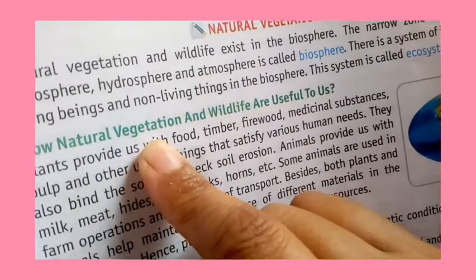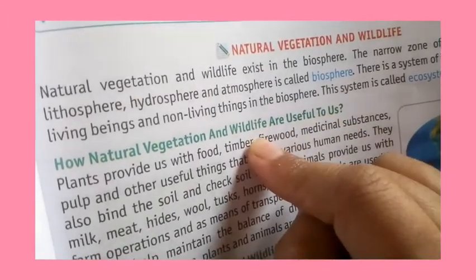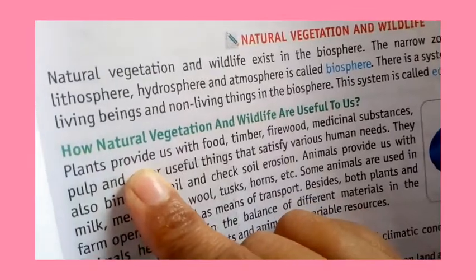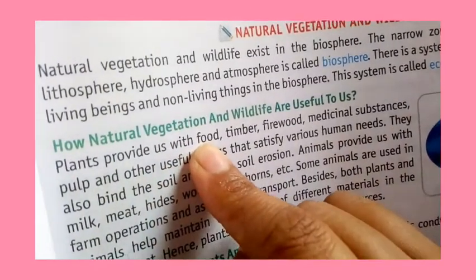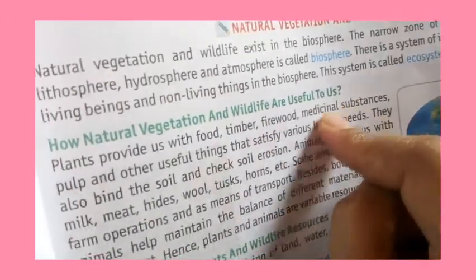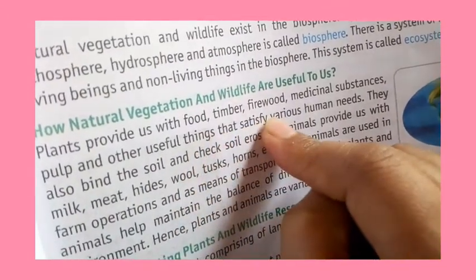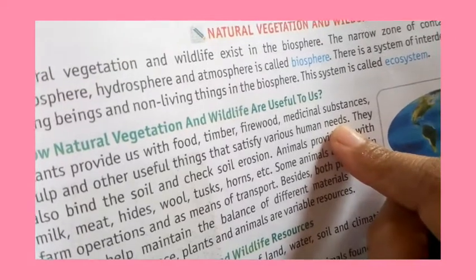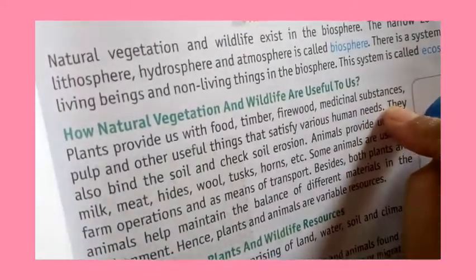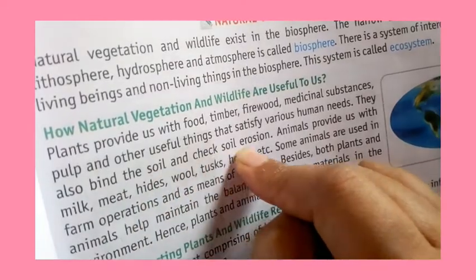Natural vegetation and wildlife are useful to us in many ways. Plants provide us with food, timber, firewood, medicine, pulp, and other useful substances that satisfy various human needs. They also help bind the soil and check soil erosion.